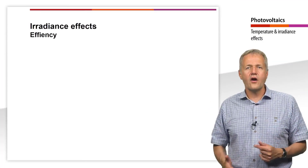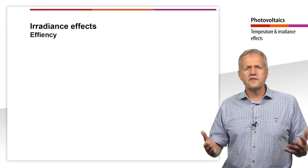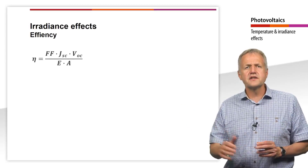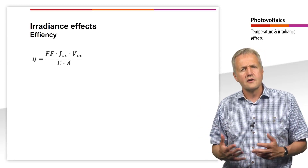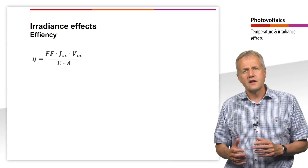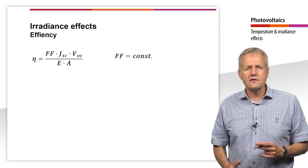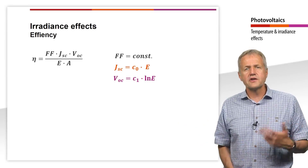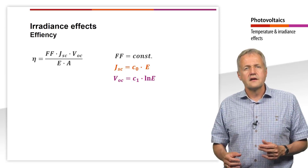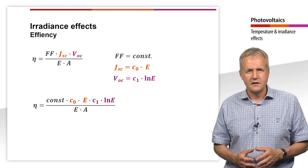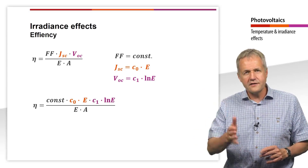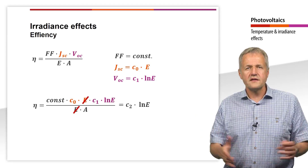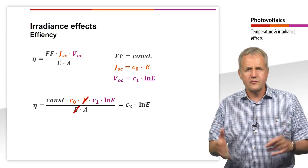Let us now look at the influence of irradiance on efficiency. In the first teaching unit of this chapter, we defined the efficiency of our solar cell, which is linearly related to the short-circuit current and the open-circuit voltage. For simplicity, we assume that the fill factor remains constant as the irradiance changes. We have shown that the short-circuit current increases proportionally with irradiance, and the open-circuit voltage increases proportionally with the logarithm of the irradiance. Putting these relations into the efficiency formula and simplifying, we can eliminate the irradiance and summarize all constants into a constant C2. So the efficiency of a solar cell is proportional to the logarithm of the irradiance.